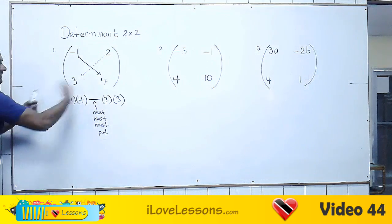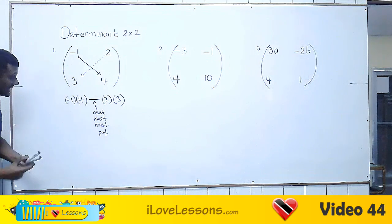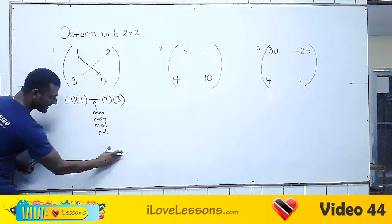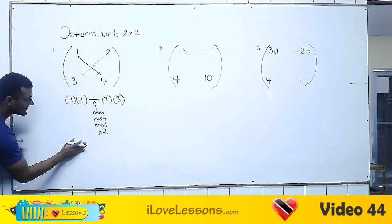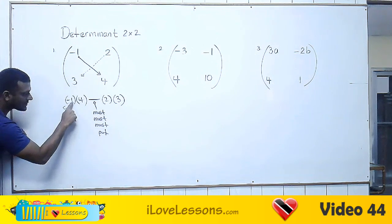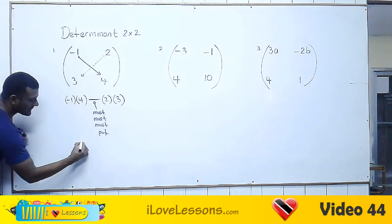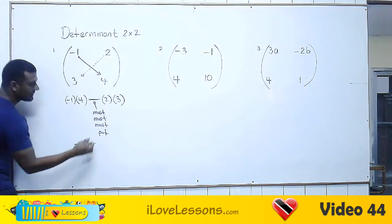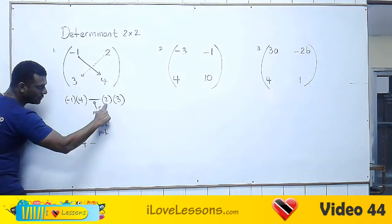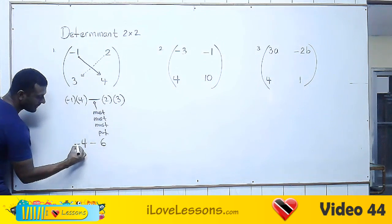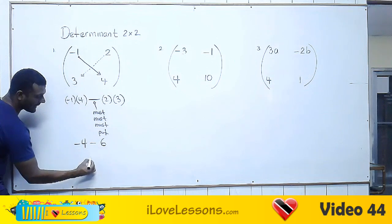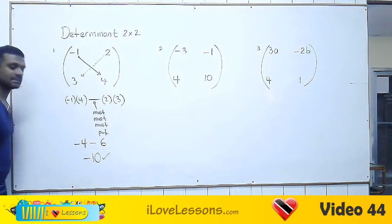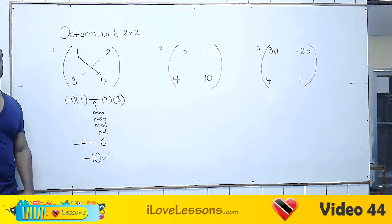All we have to do is simplify this and we're finished. Minus one multiplied by four is minus four. Remember this minus sign — that's this minus sign here. Two multiplied by three is six. Minus four minus six is minus ten. We're finished — the determinant is minus ten for this two-by-two matrix.